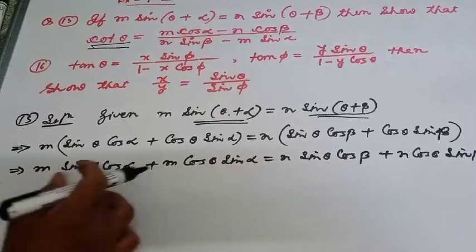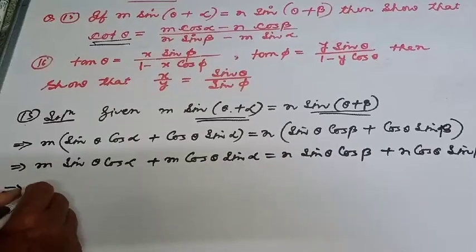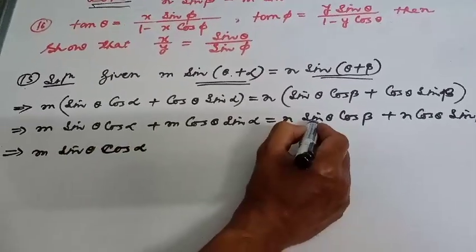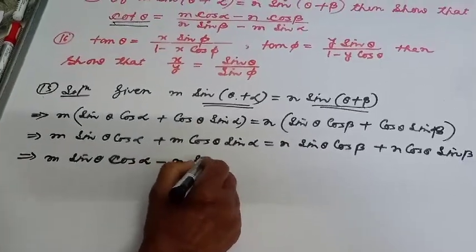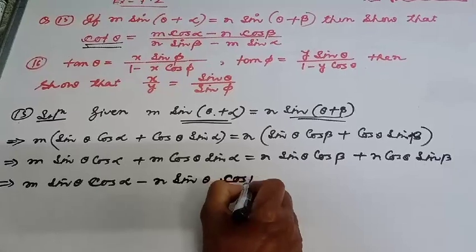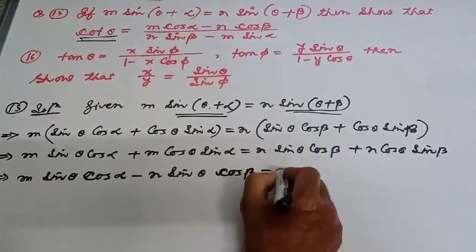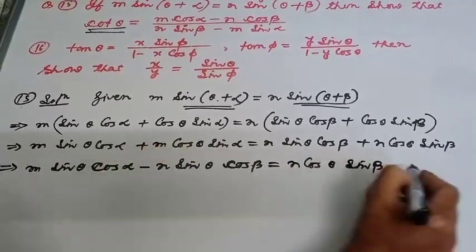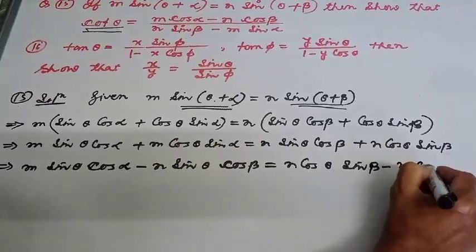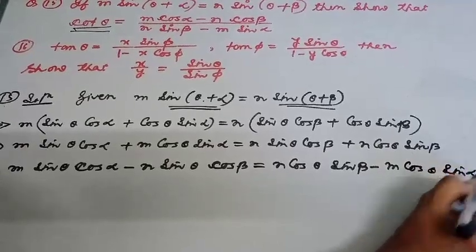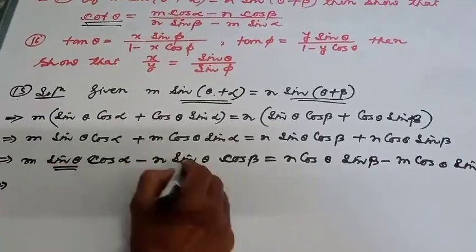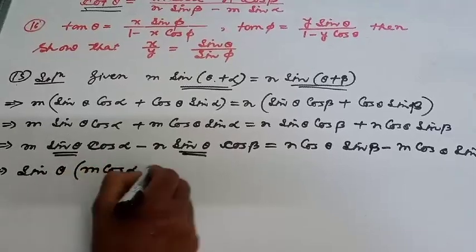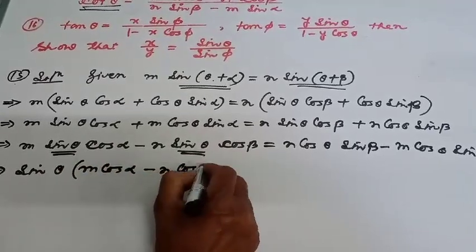Expanding the right-hand side: m·sin θ·cos α minus n·sin θ·cos β. Taking sin θ as common: sin θ times (m·cos α minus n·cos β).